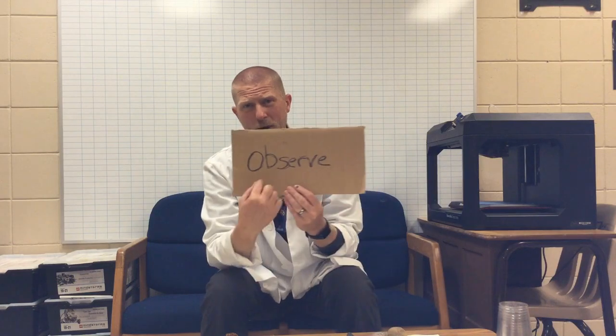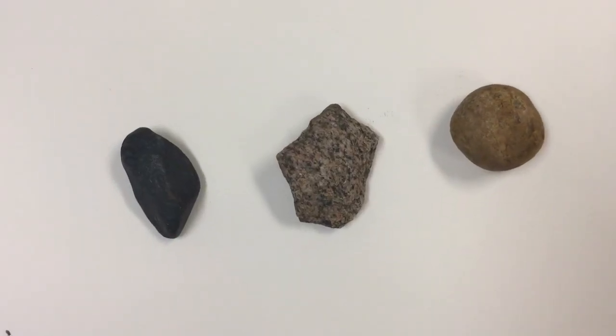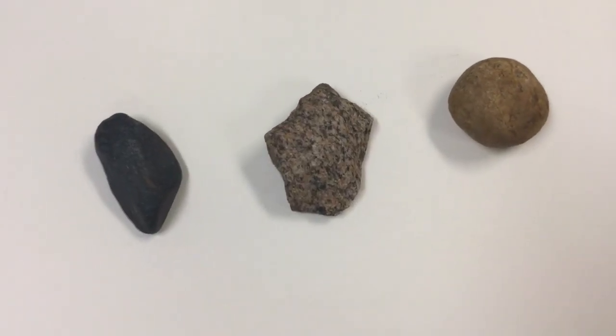Today we are going to observe like a scientist. Scientists look closely and observe — not to say what something is, like 'a rock,' but to say specific things about all of the features of that rock. A scientist is going to observe and look closely at what the thing looks like and what it's made up of.